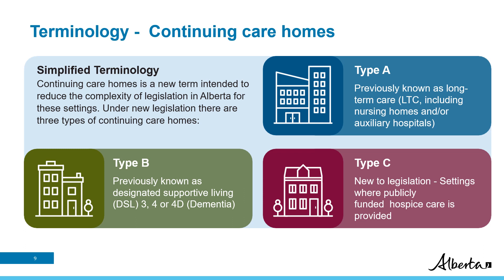All continuing care homes will now be licensed. The continuing care home license has three types: A, B, and C. Type A is what was previously known as long-term care, which included nursing homes and auxiliary hospitals. Residents of Type A continuing care homes are individuals with complex medical needs who can't safely reside at home or other types of continuing care accommodation. Type B is what was previously known as designated supportive living (DSL), which includes DSL 3, 4, and 4D. Residents in this setting have complex medical needs but do not require the type of support provided by Type A facilities.